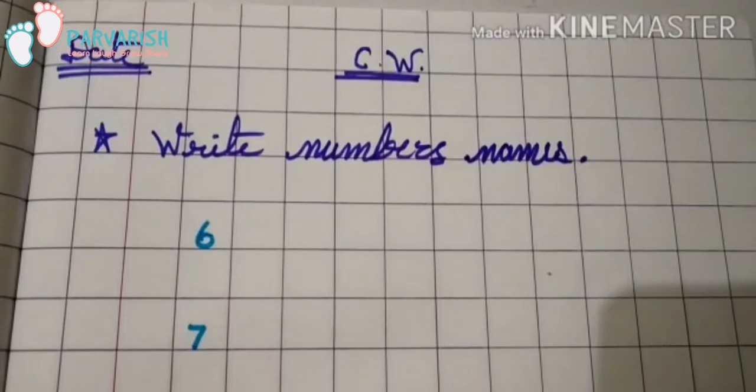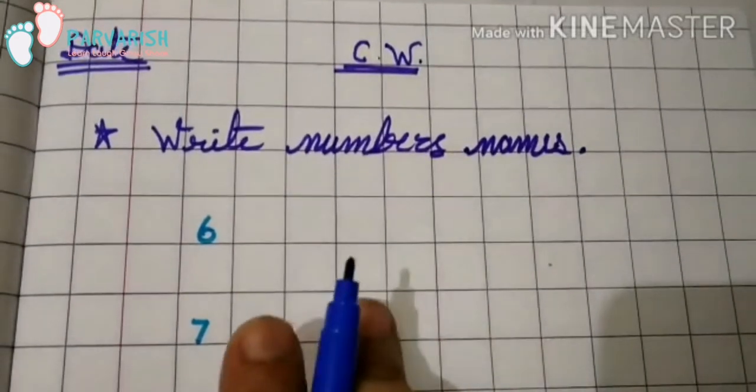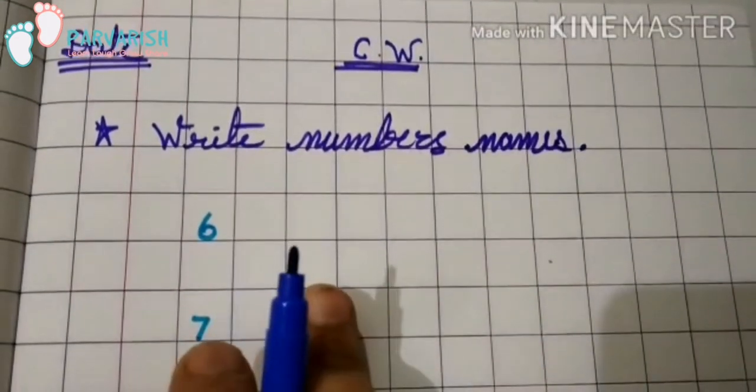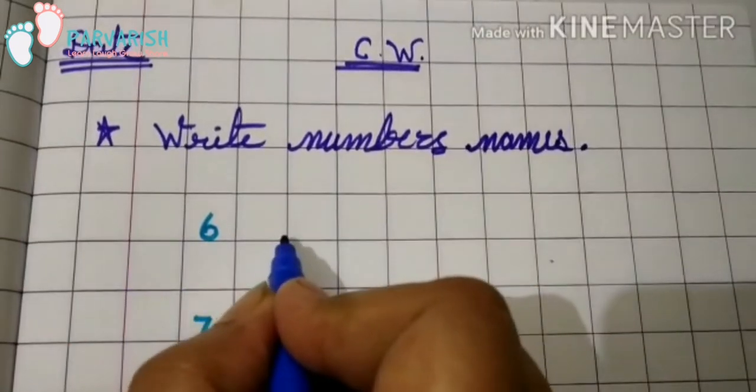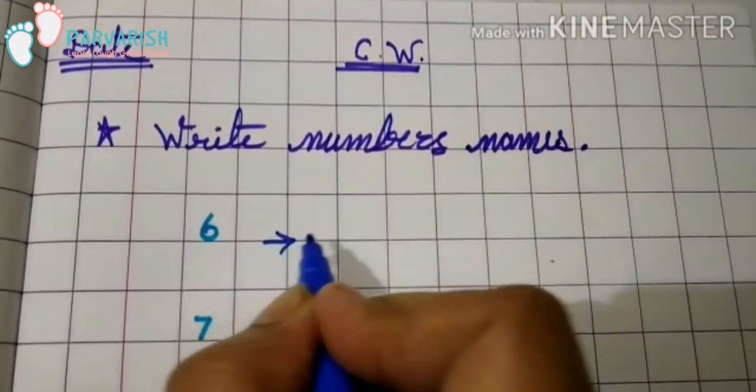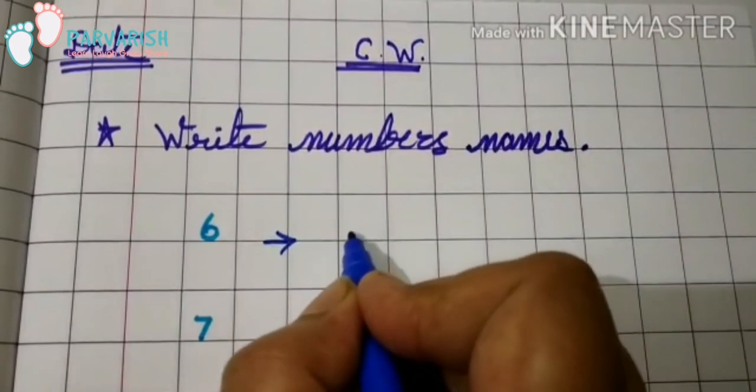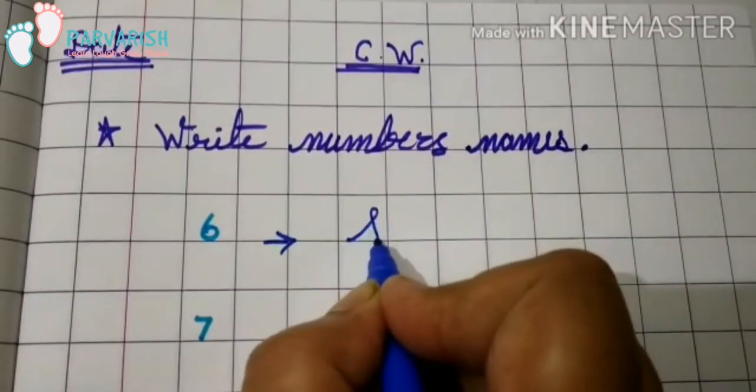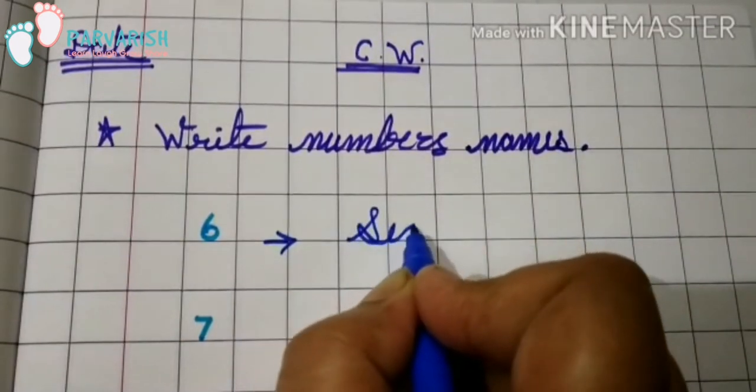So, write the number names 6, 7, 8, 9, 10. Start. First, we will write 6 number name. S, I, X.